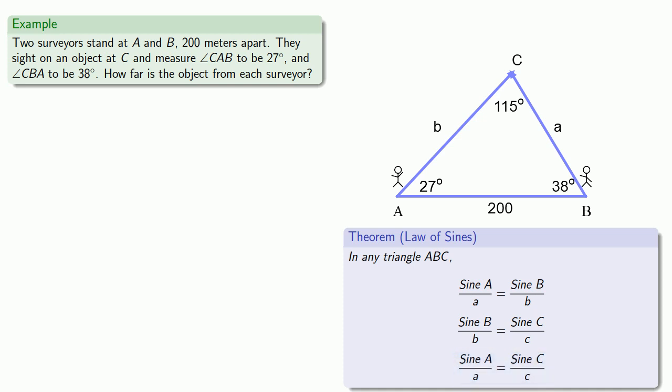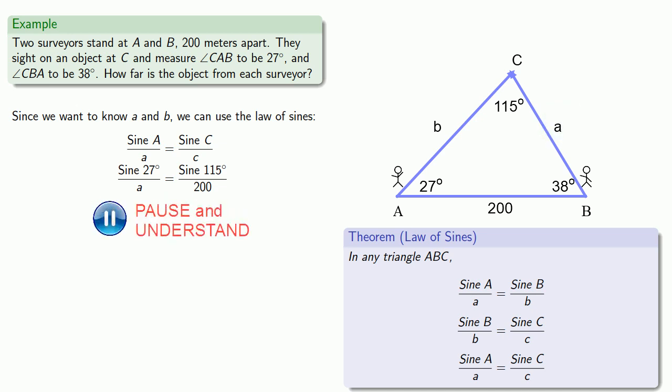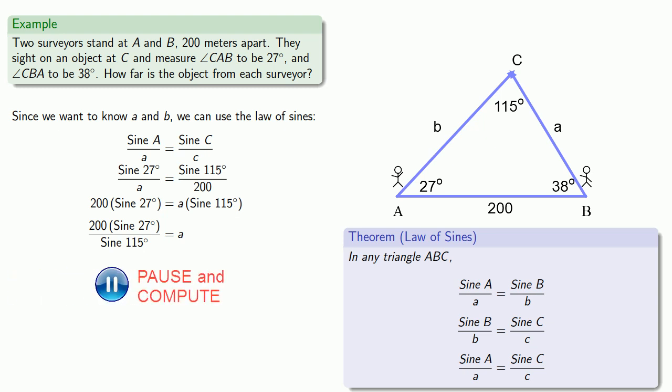So let's fill in our numbers. Angle A has a measure of 27 degrees, angle C has a measure of 115 degrees, lowercase c has a length of 200, and a is the only thing we don't know. Let's rearrange our equation a little bit and solve for a. And we'll use a calculator to find the values of sine of 27 degrees and the sine of 115 degrees, and that gives us our value of a.